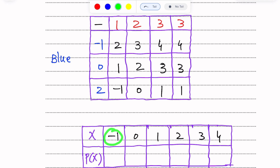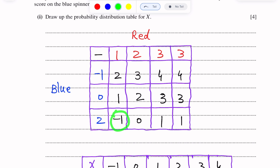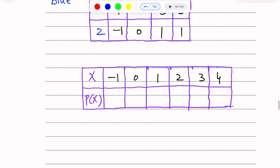What is the probability of minus 1? Total possible outcomes are 12. Minus 1 appears only once in the possibility diagram. So the probability of minus 1 is 1 over 12.